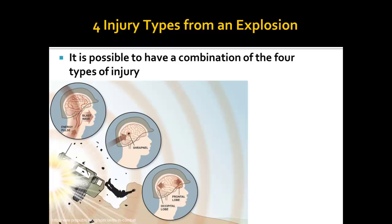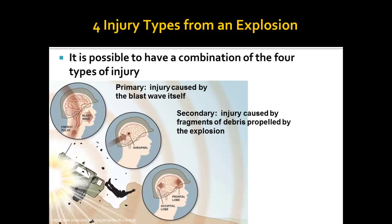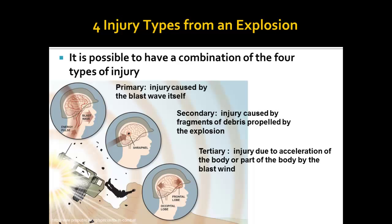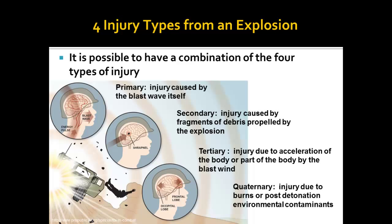There are four types of injury that can be sustained from an explosion. The primary injury is the injury caused by the blast wave itself. The secondary injury is injury caused by fragments of debris propelled by the explosion — that can be shrapnel, rocks, or a variety of items within the vicinity of detonation. Tertiary injury is injury due to acceleration of the body or part of the body by the blast wind, such as when the body is lifted and thrown into a brick wall. Quaternary injury is injury due to burns or post-detonation environmental contaminants.